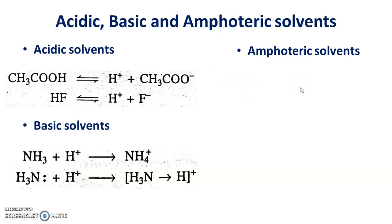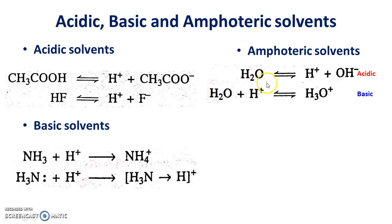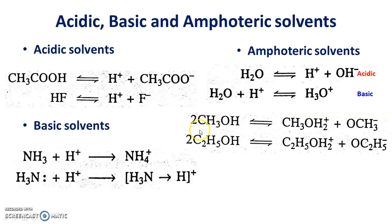Amphoteric solvents are those which show both acidic and basic properties. Examples include water and lower alcohols like methanol and ethanol. Water acts as acidic when it donates a proton, and acts as basic when it accepts a proton to form hydronium ion H3O+, so it is amphoteric. Similarly, in methanol, one molecule transfers a proton to another, forming CH3O- and CH3OH2+, demonstrating both proton donation and acceptance. Lower alcohols like ethanol behave the same way and are therefore amphoteric solvents.